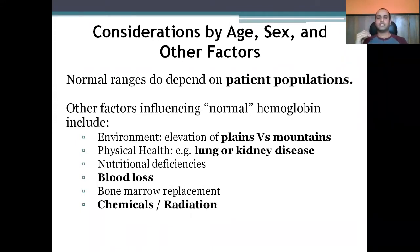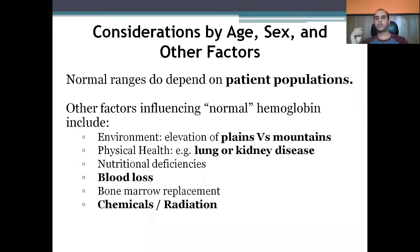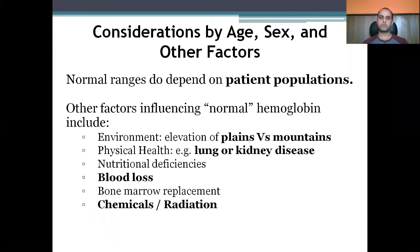Other factors that cause changes in hemoglobin level include environment — for example, people living at high altitudes like mountains have more RBCs due to lower oxygen availability. Physical health factors such as lung or kidney disease may decrease RBC count. Nutritional deficiencies, blood loss, bone marrow replacement, and exposure to chemicals or radiation can all lead to anemia.